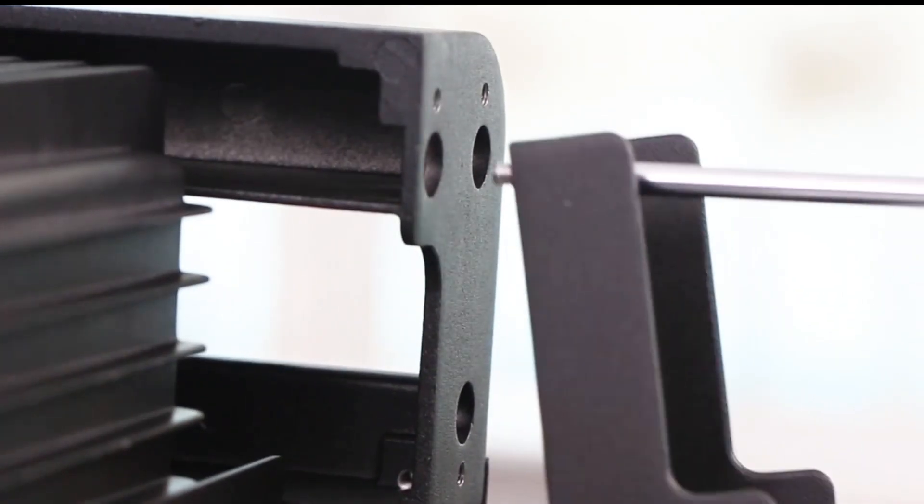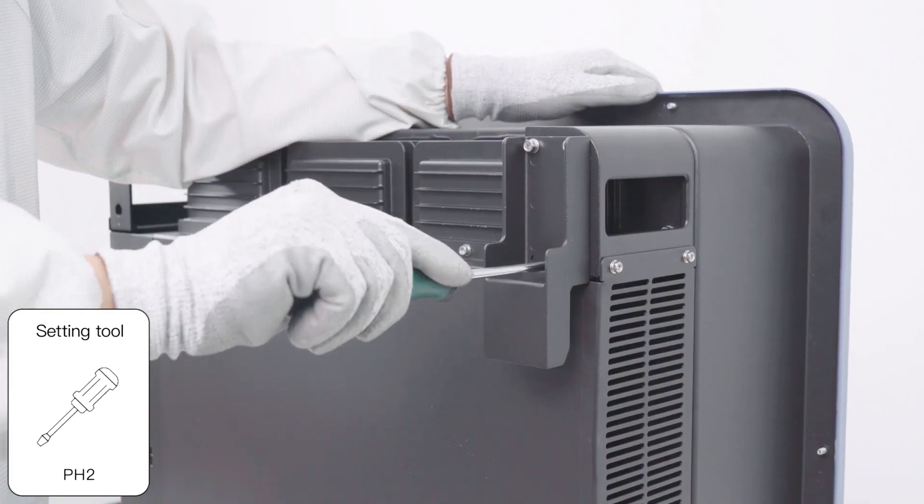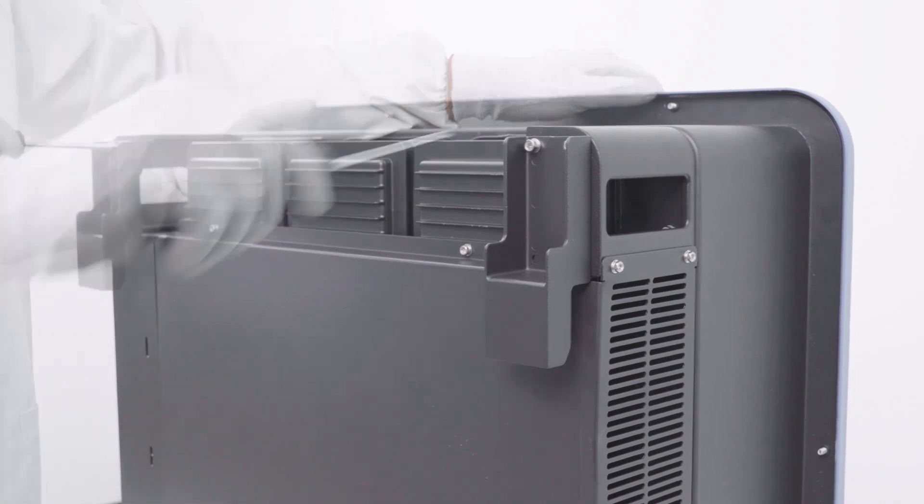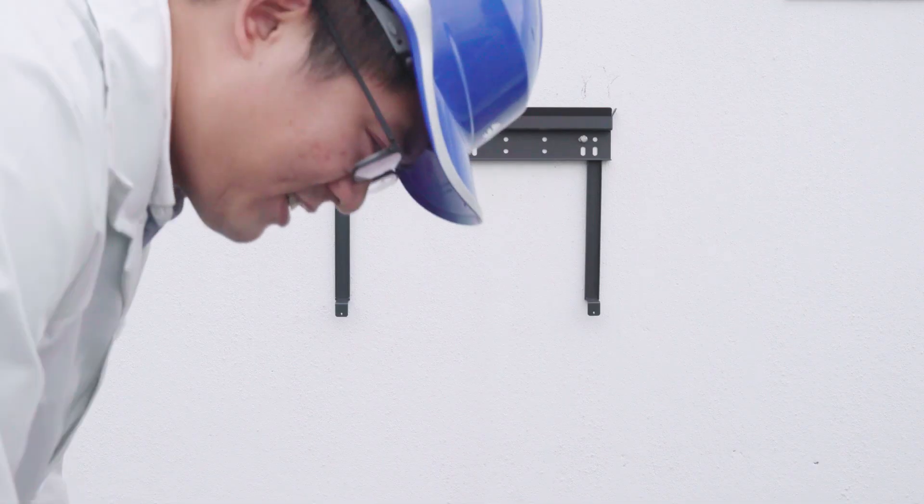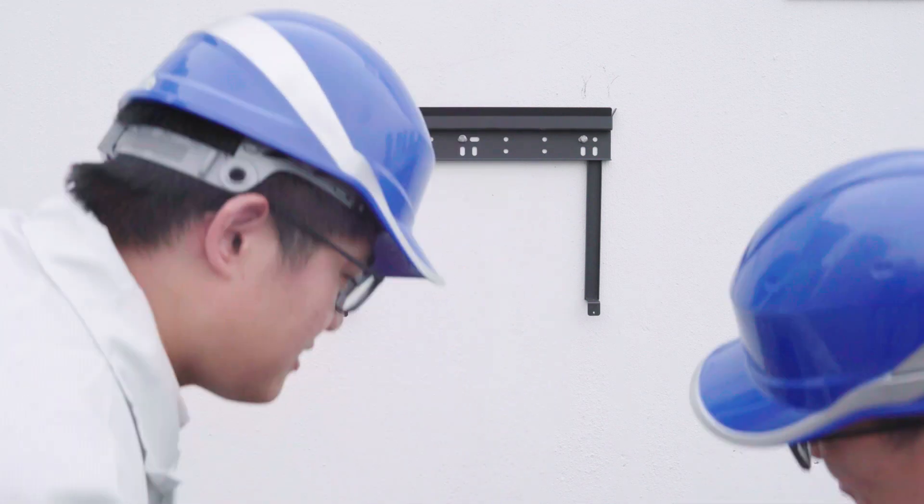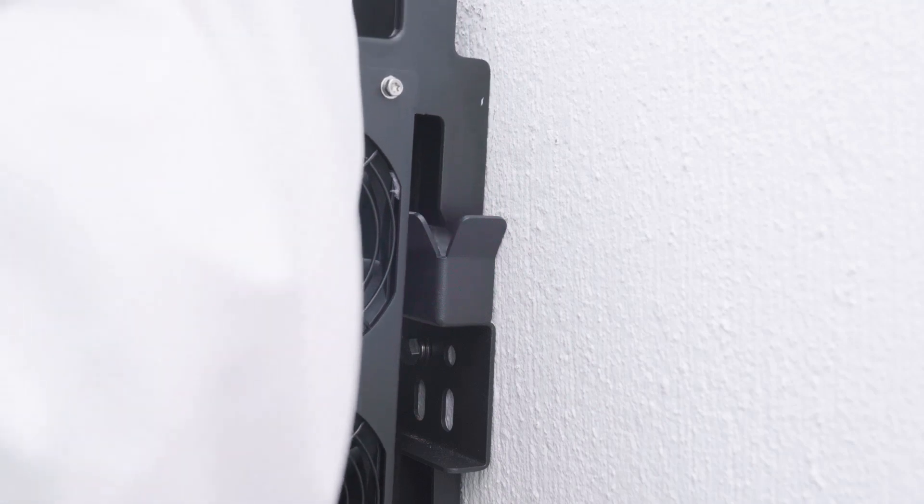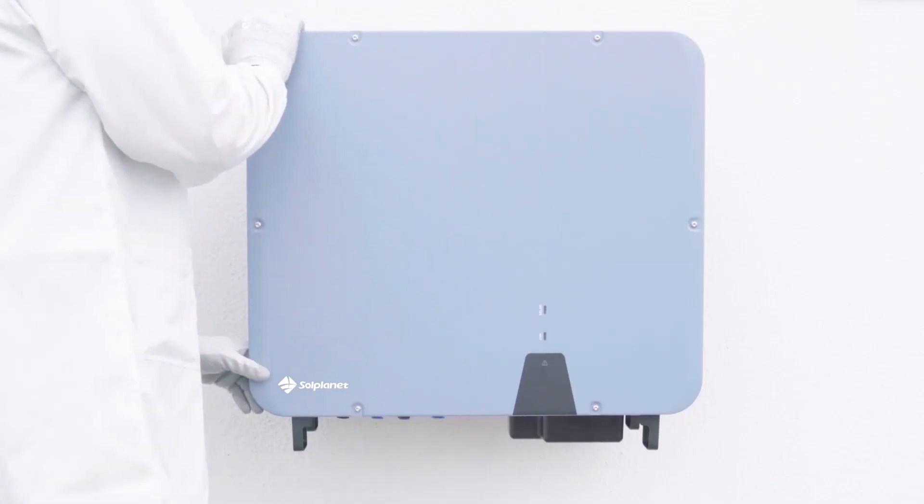Use screws to lock the bracket support on both sides of the inverter. Hang the inverter onto the wall mounting bracket. Check both sides of the heat sink to ensure that it is securely in place.